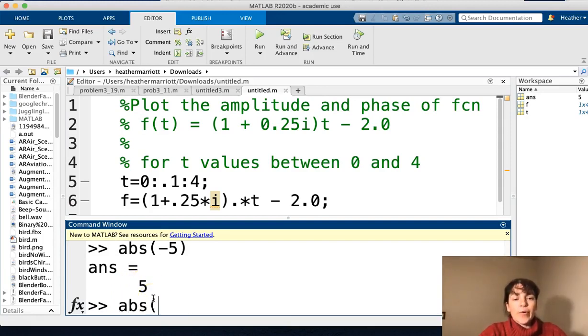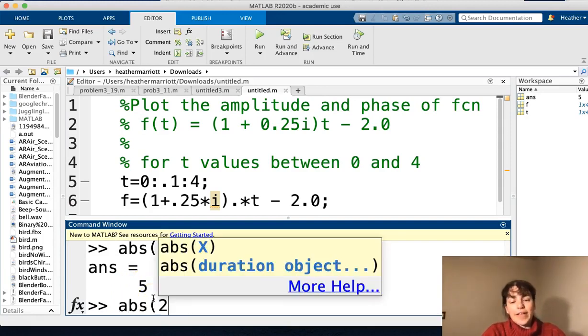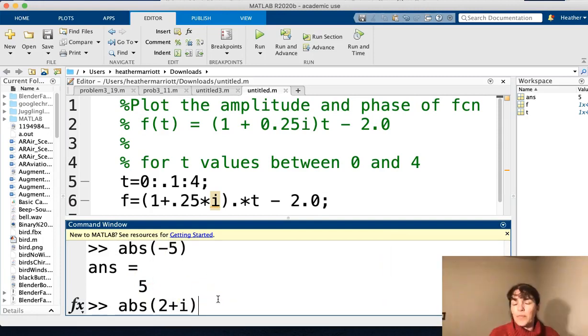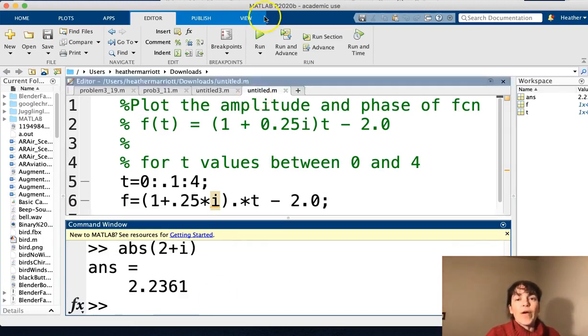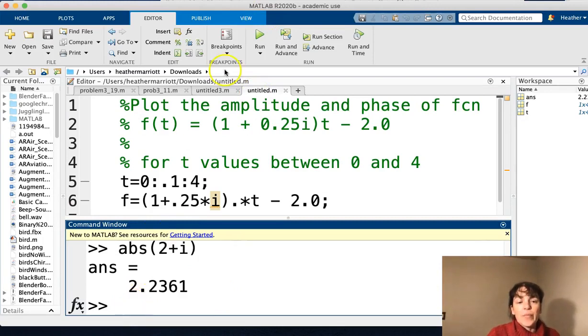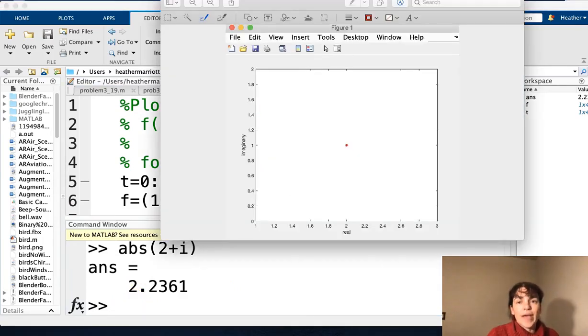But the million dollar question is, what if you have a complex number that has a real and an imaginary component? What does it mean to say the absolute value of 2 plus i, and i is the square root of negative 1? Well, we can calculate the answer. We could also graphically imagine that.